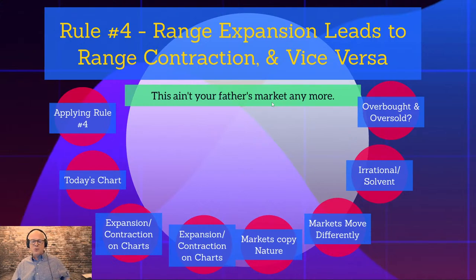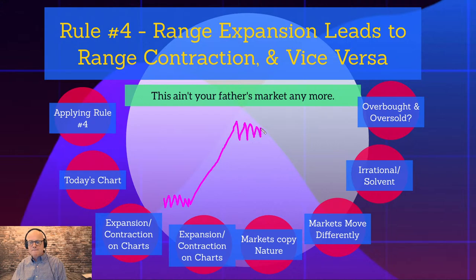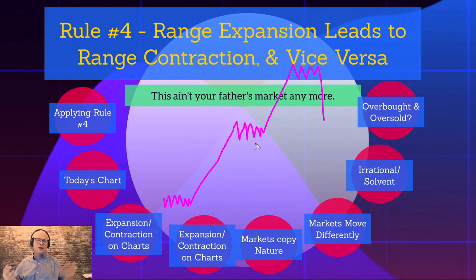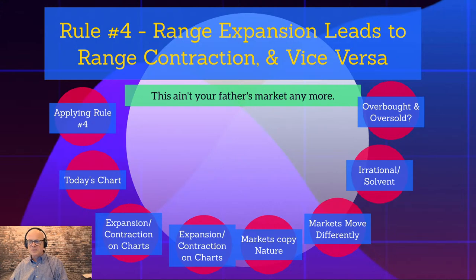Rule number four is really important — this is where we get into the concept of energy. Markets have energy; they act just like an organism. Range expansion leads to range contraction. Range expansion means price trends — it expands the range. But once something trends, range expansion moves to range contraction. And then range contraction moves to range expansion again, which could go in the opposite direction. It works like potential energy building up, expanding into kinetic energy until exhausted, then restored again with potential energy.